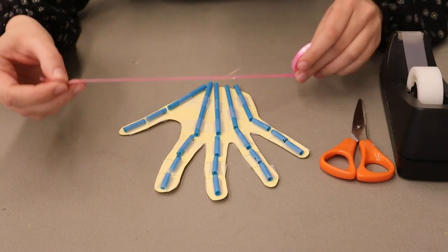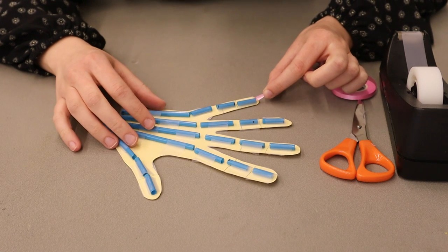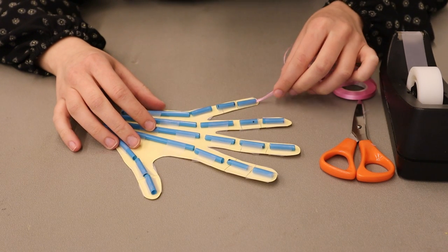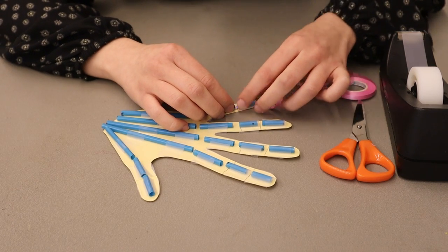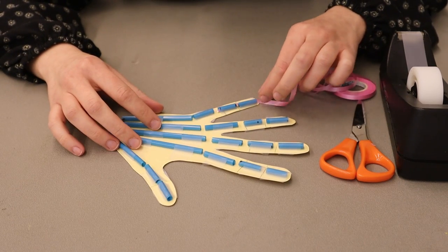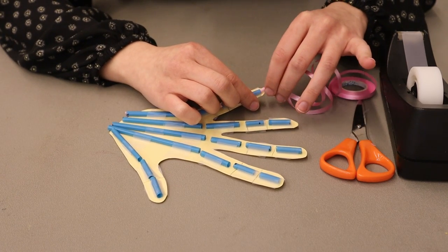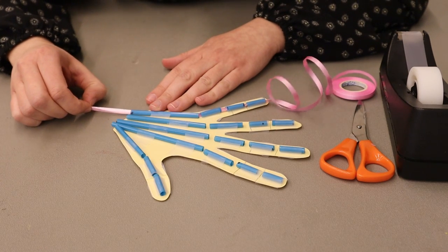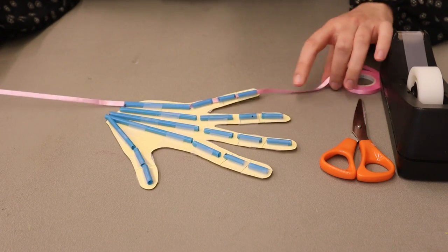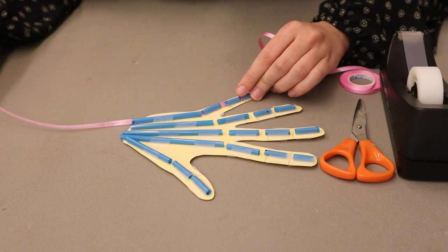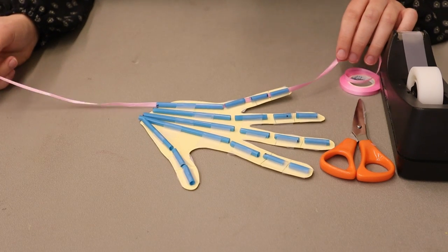We are going to grab some ribbon or string, grab our palm, and we are going to thread the string or ribbon into each straw. Take your time, it may be a little tricky. And keep threading it in. Now it's at the end. And we are going to pull just enough, about 10 centimeters worth. You can eyeball this, just so we can still pull on our finger and make it move.